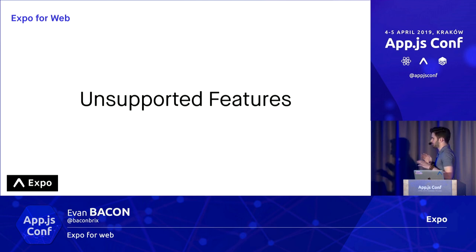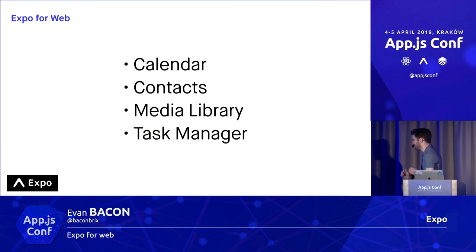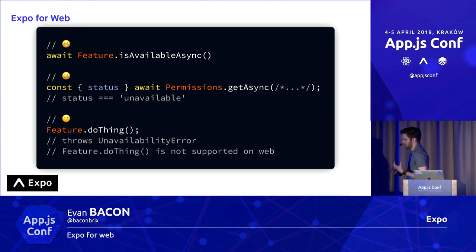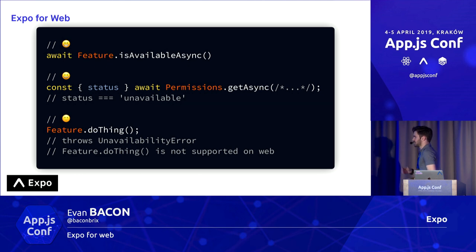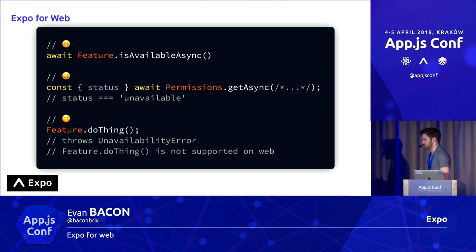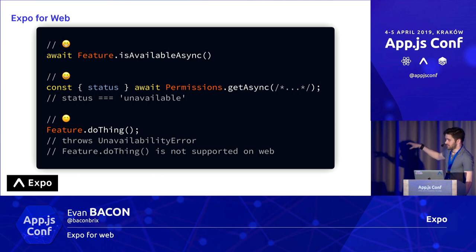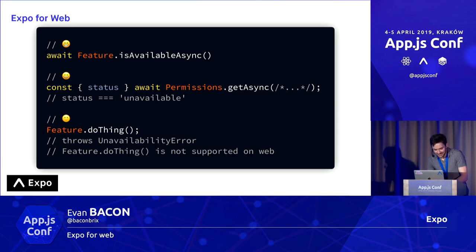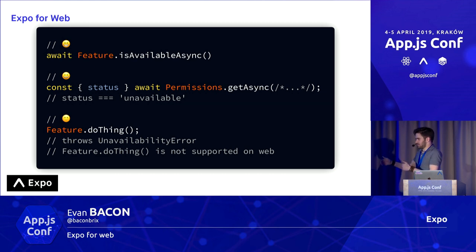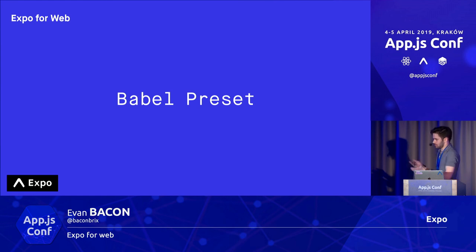Finally, there are the unsupported features — things we just couldn't make work in the web, like the calendar API, contacts, and media library. For these, we need to fail gracefully. We have three main methods: the first is is_available, which you can find in the sensors API — if barometer is not available, you can detect that. Other things you can hide behind a permission — on camera, if there is no camera on the device, it will return unavailable instead of denied or granted. And lastly, it will throw a custom error called the unavailability error, which tells you exactly which method is not usable on the web.